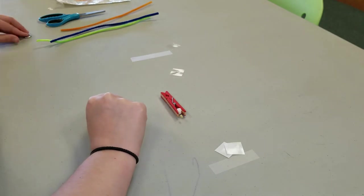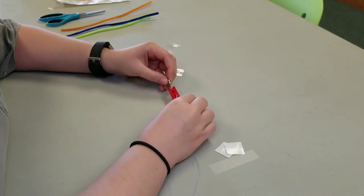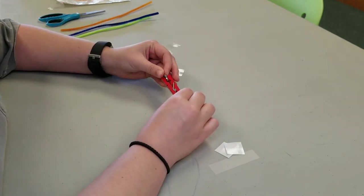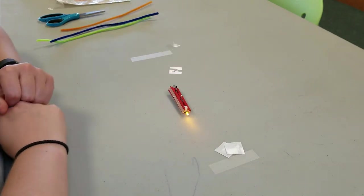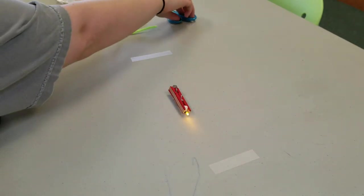Now take your coin cell battery, put it between the teeth, and your light should light up. If it doesn't, flip the battery over to the other side.